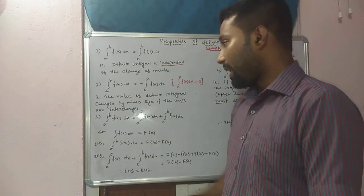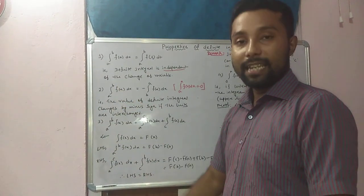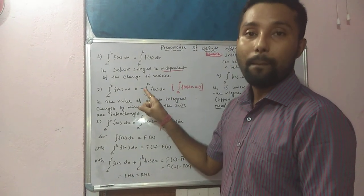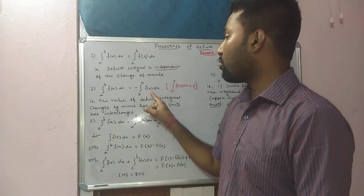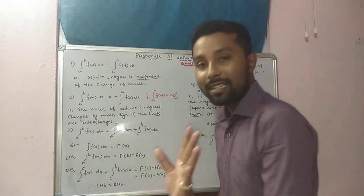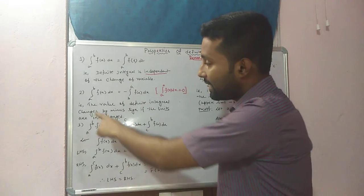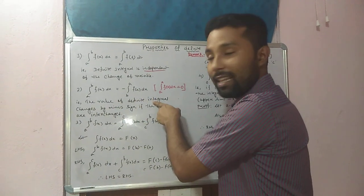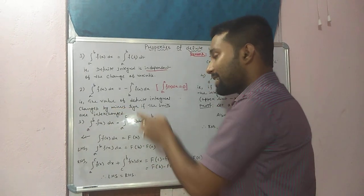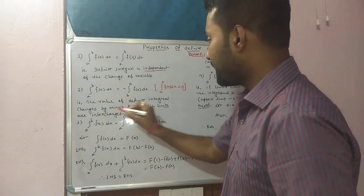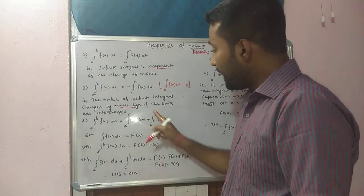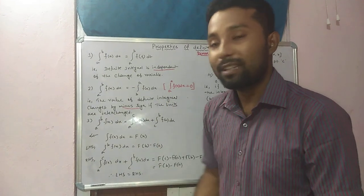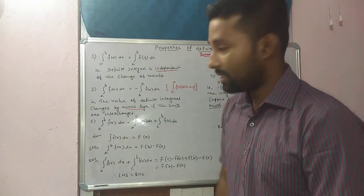Property number two: integration a to b of f(x) dx is equal to minus integration b to a of f(x) dx. What does it mean? The limits have been interchanged. That is, the value of the definite integral changes by a minus sign if the limits are interchanged. So if we interchange the limits, we must use a minus sign.